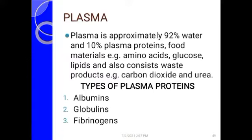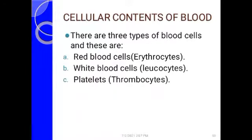Approximately 92 percent of plasma is water, and about 8 percent is composed of substances like plasma proteins and transported food minerals including amino acids, glucose, and lipids. The types of plasma proteins in blood plasma are albumins, globulins, and fibrinogen. Their main function is to maintain homeostasis — regulating the amount of fluid within blood vessels and within tissues.